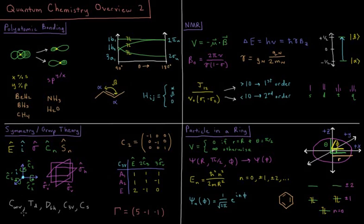We show how these operations form a point group. The point group has labels like C infinity V, Td, D6H, C3V, or Cs.